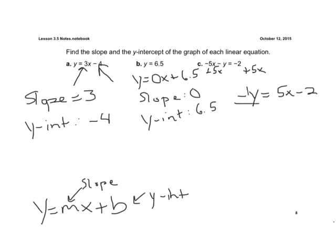If there's no number in front of the Y, we can assume there's a 1. So if we divide by a negative 1, make sure we divide the whole right side by a negative 1. We're going to get Y equals a negative 5X. Now a negative 2 divided by a negative 1 is a positive, so plus 2.